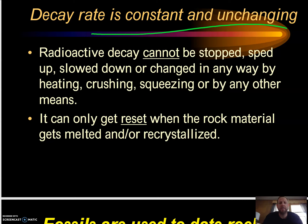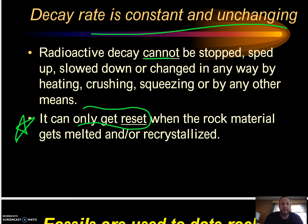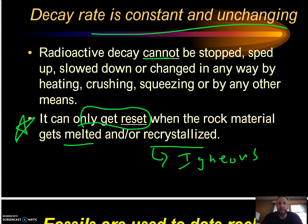This cannot ever be stopped, cannot be sped up, cannot be slowed down, cannot be changed. Heating or crushing does not do anything. There's only one thing that can reset the isotope — if we melt or recrystallize the rock. So if it's melting and recrystallizing, it is igneous.